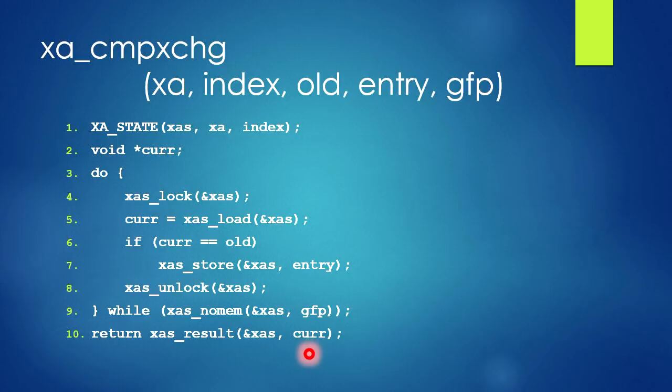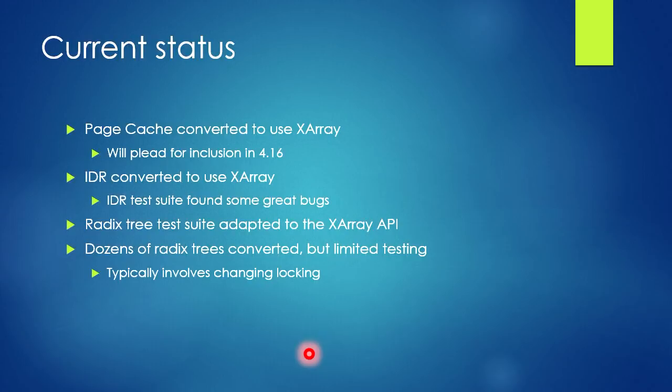As far as I know, the X-array is currently bug-free. It has a test suite — I've converted the radix tree test suite over to use it, so it now has better test coverage than the radix tree had. That doesn't mean it has fewer bugs, because the radix tree has been around a while and most of its bugs have hopefully been squashed. But we're close — I think it's ready for inclusion. I just need to convince everybody else it's ready for inclusion.